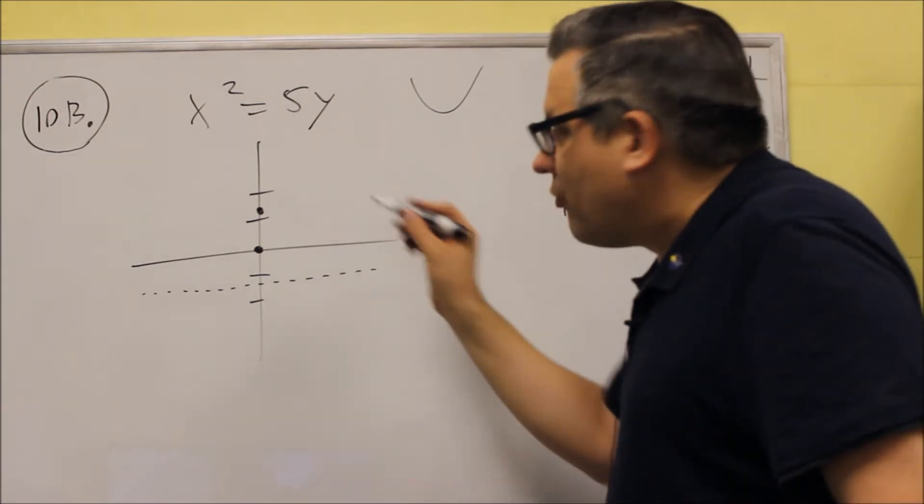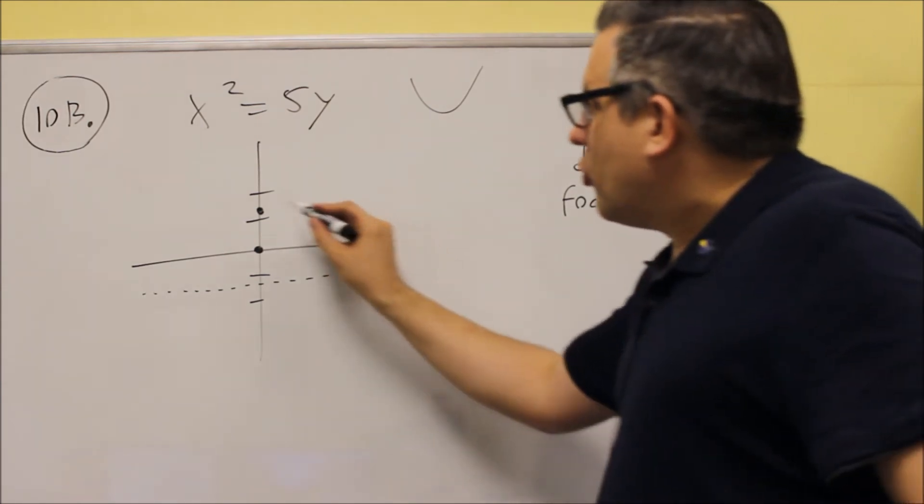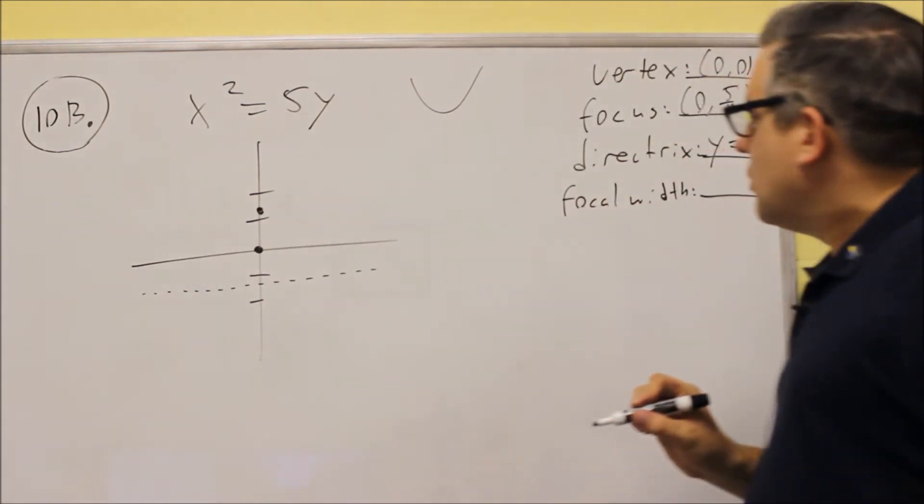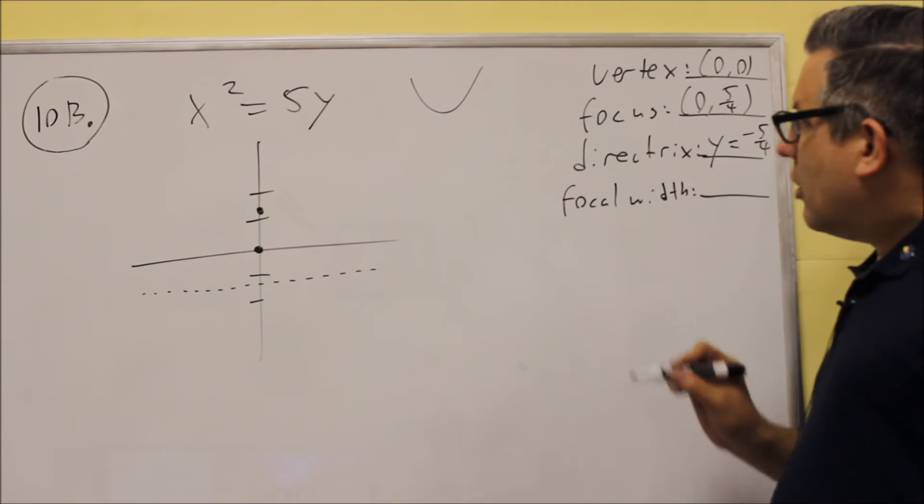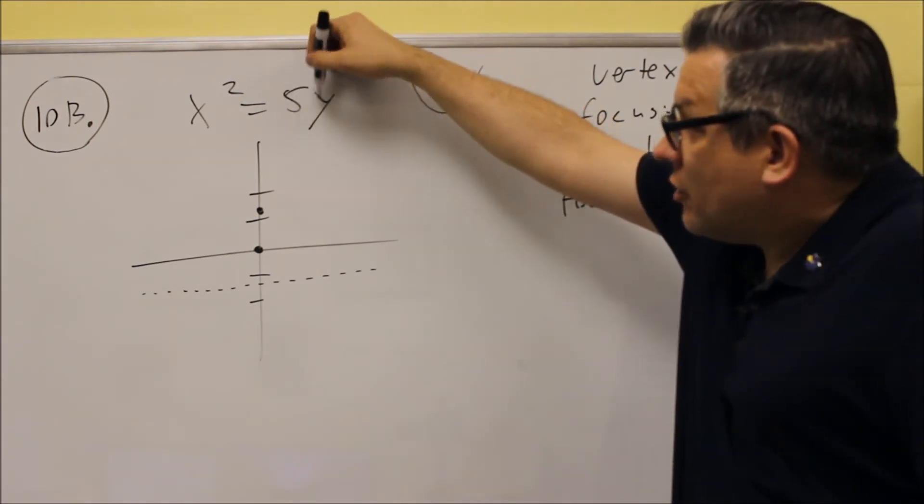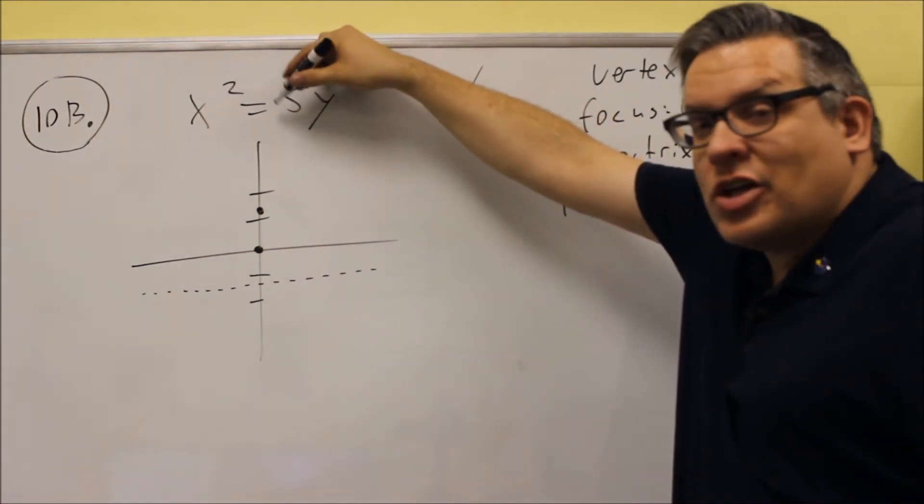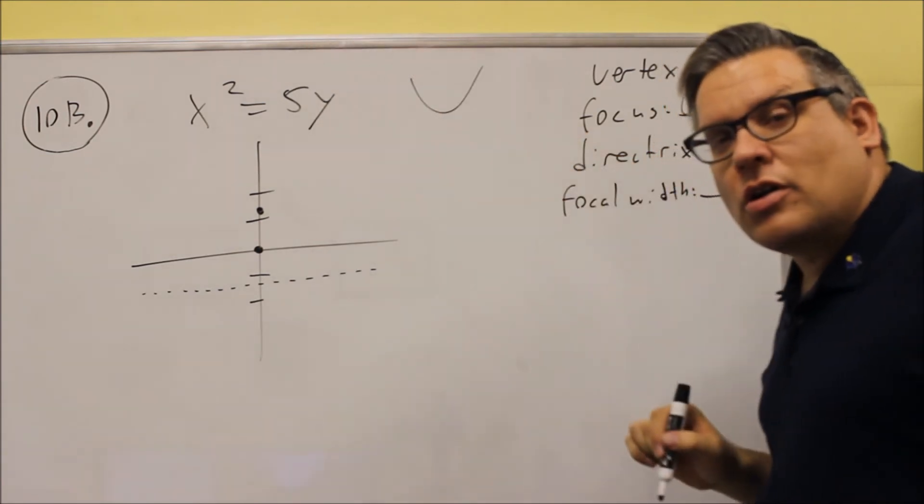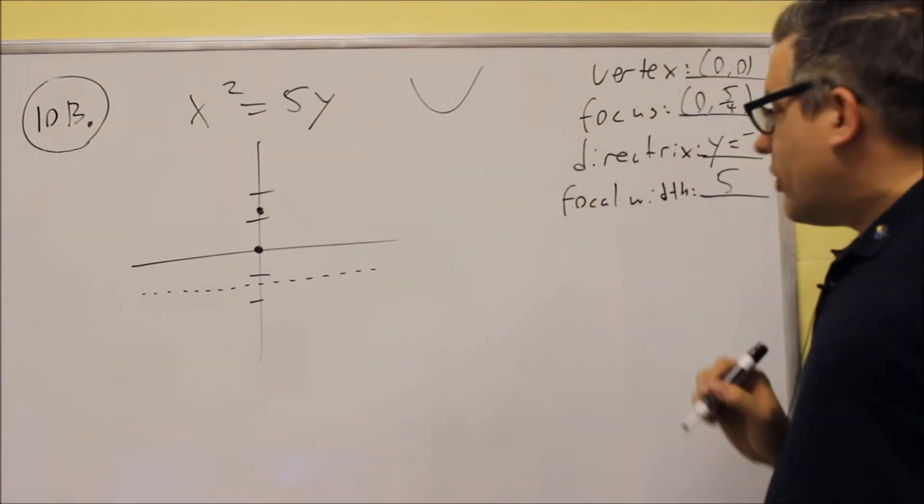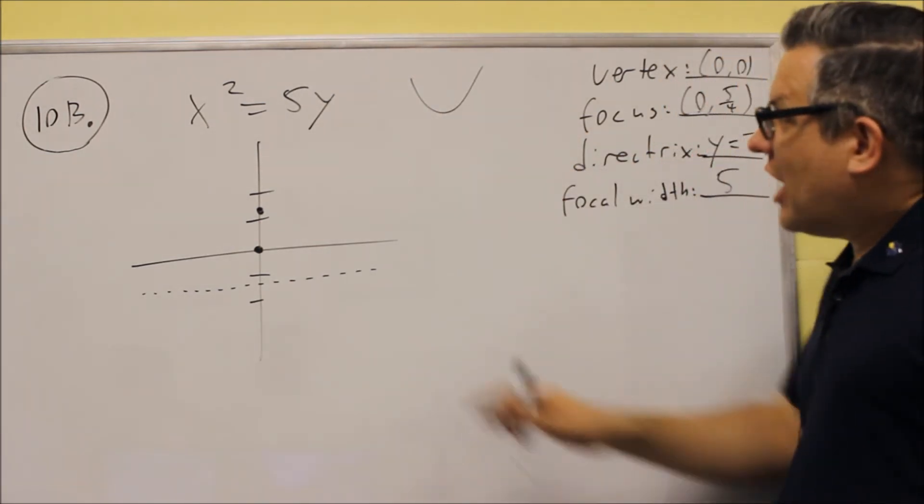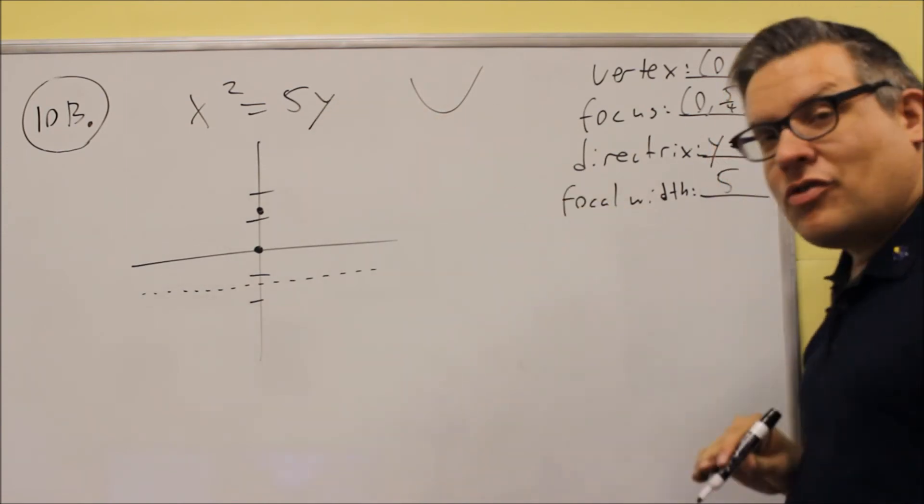Now, the last thing we're going to do is get the focal width. So, focal width is the width at the focus. If you take this right here, that means that your focal width is always the absolute value of that number in front of the non-squared variable. Focal width is 5. So, it's always absolute value of that. Absolute value of 5 is 5.